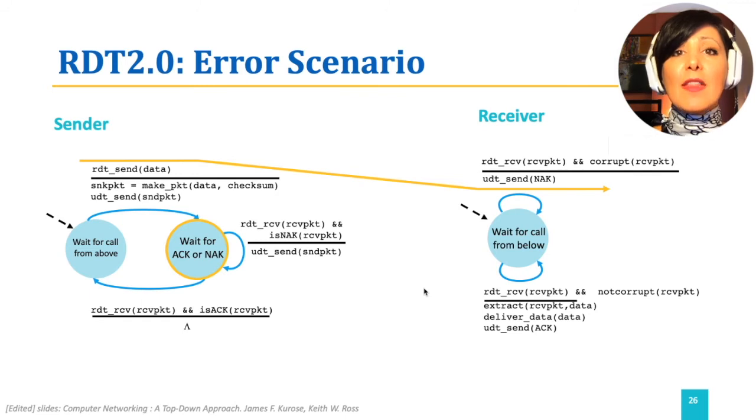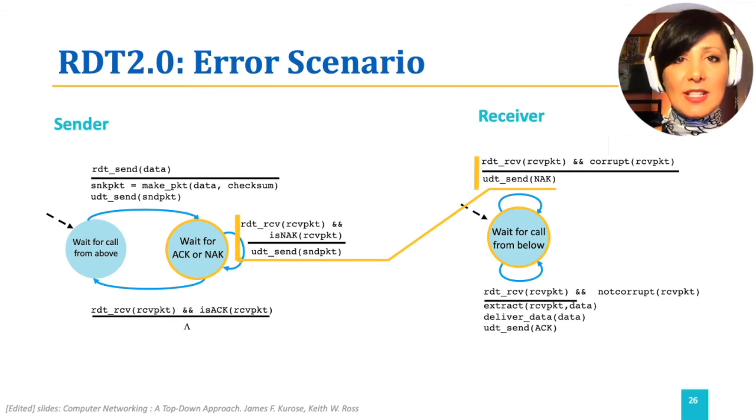On the receiver side, the packet is received. It is corrupted, and therefore, the packet is discarded and a NAK is sent to the sender using UDTSend. The sender, which is in the state waiting for acknowledgement, receives the NAK and therefore, sends the packet again.